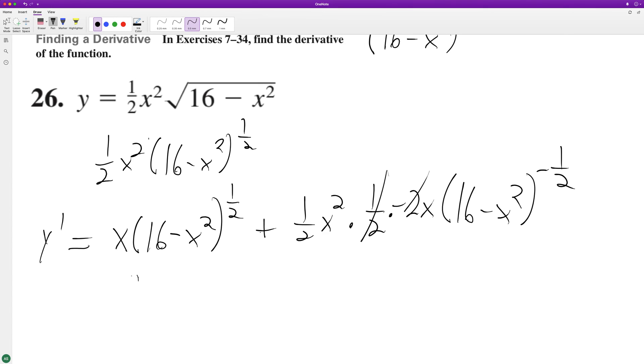So this ends up being equal to negative x cubed. So when we finalize this, what we end up with is x times the square root of 16 minus x squared. And then minus x cubed over 2 square root of 16 minus x squared.